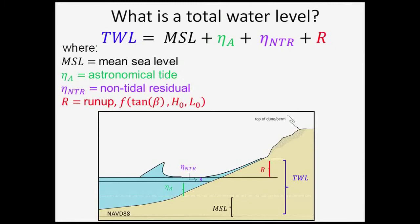On top of that, we can add our non-tidal residual, which is any elevation change in the water level that's not due to the tide. This could be due to El Niño effects, storm surges, or just seasonal temperature changes in the water. And then finally, we can add the wave run-up, which is the wave-induced component of the total water level, and that's the area I will be focusing on most today.